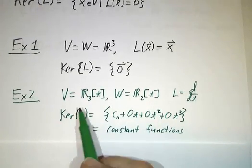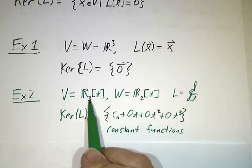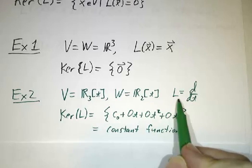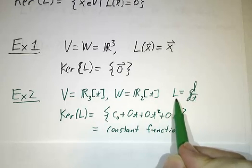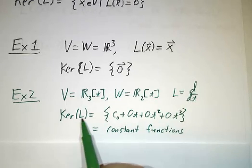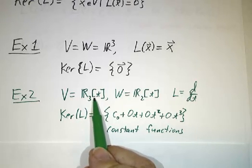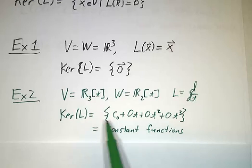Next example, our V is a space of cubic polynomials, W is the space of quadratic polynomials, and our linear transformation is the derivative. So what's the kernel of L? Well, it's all cubic polynomials whose derivatives are zero.